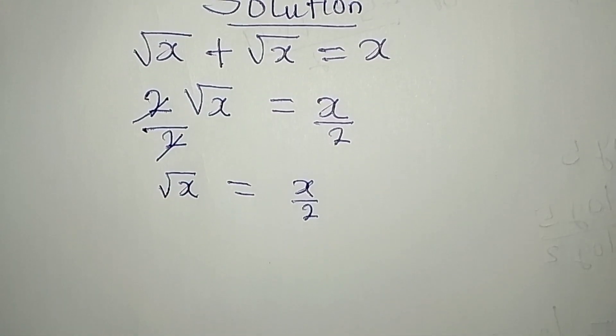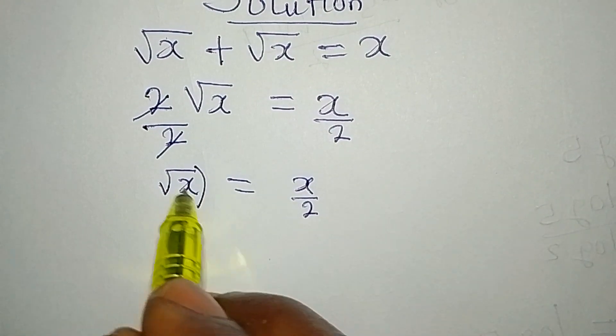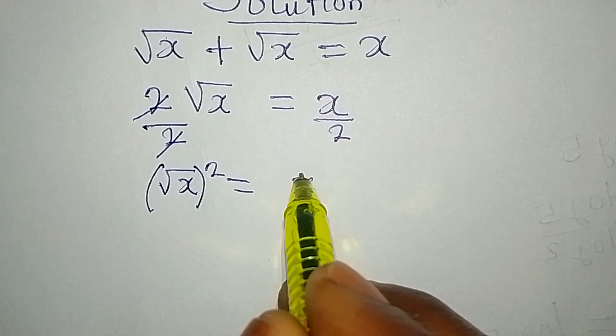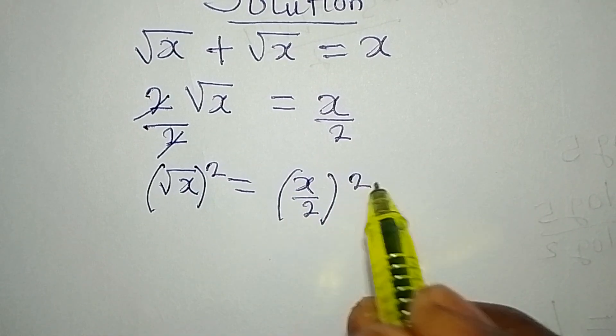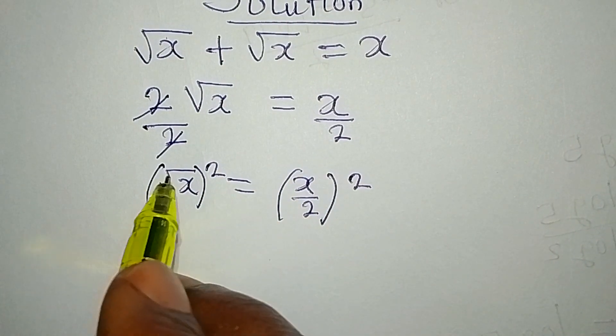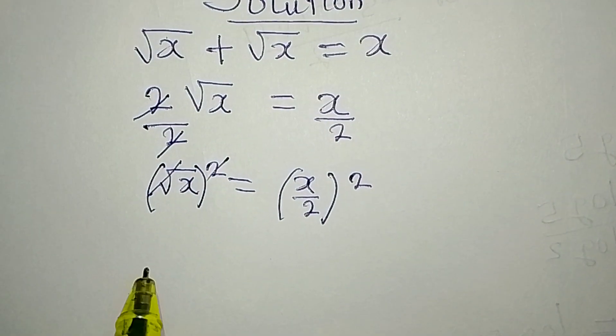Now the next thing is to remove the square root by squaring it, and then the whole of this will be squared as well. This and this will be gone.